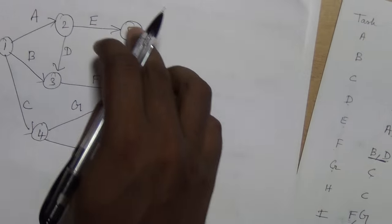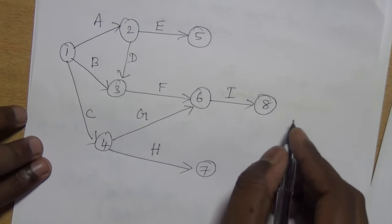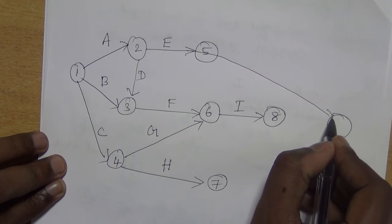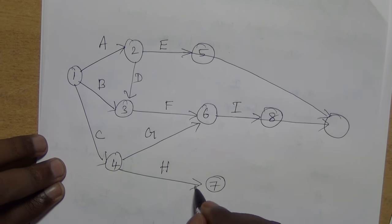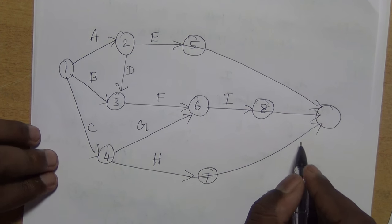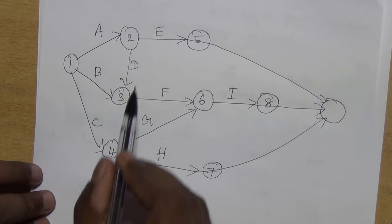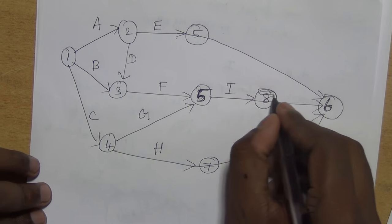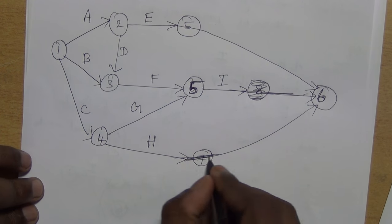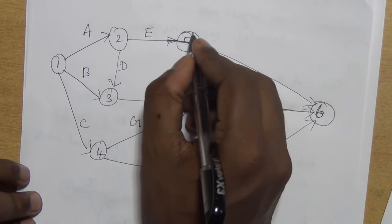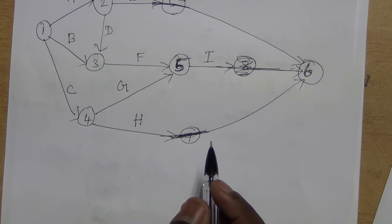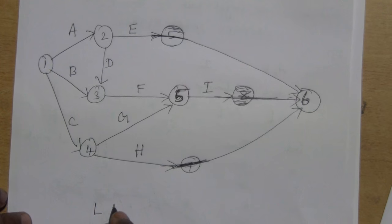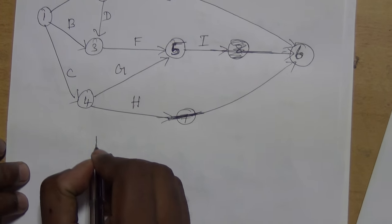Three end states have been completed. Instead of keeping three separate ending states we can have one single end state and connect directly to it. So we can eliminate those three states. We have nodes 1, 2, 3, 4, 5, and 6. These extra states are eliminated because they connect to the ending state. We have constructed our network graph. The next step is to calculate latest completion time and earliest start time for every node.